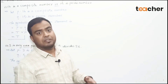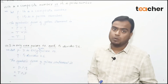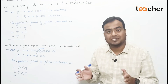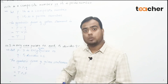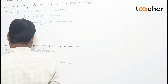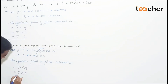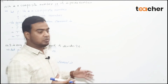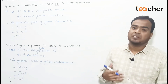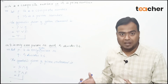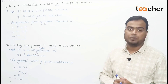When we use conjunction, for the compound statement to be true both simple statements must have truth value true. Here Q is false, so the final truth value of the conjunction P ∧ Q is false. In this way we have converted the compound statement and determined its truth value.